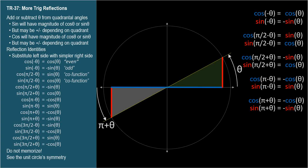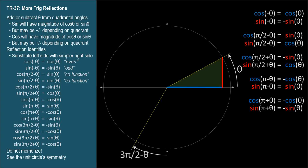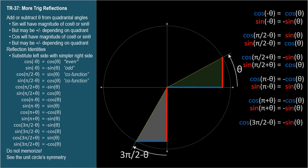We're almost done. This last axis is the negative y-axis, corresponding to 3 pi over 2. For 3 pi over 2 minus theta: cosine of 3 pi over 2 minus theta equals negative sine theta, and sine of 3 pi over 2 minus theta equals negative cosine theta.